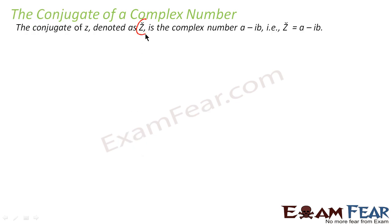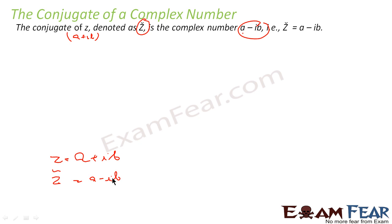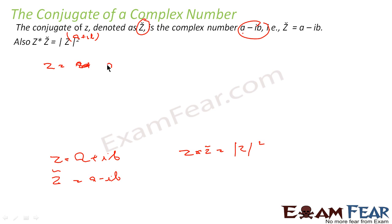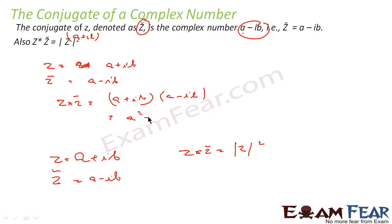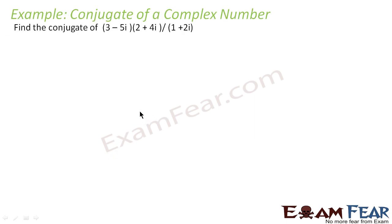Now let me introduce a new term called the conjugate of a complex number. It is denoted by z with a bar sign. For a complex number z = a + ib, the conjugate is a − ib. So if z = a + ib, then z conjugate equals a − ib. Also, when you multiply z into z conjugate, you get: (a + ib)(a − ib) = a² + b², which equals the modulus squared of z.